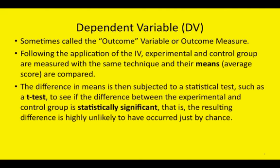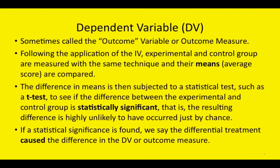This difference in means is then subjected to a statistical test, such as a t-test, to see if the difference between the experimental control group is statistically significant. That is, the resulting difference is highly unlikely to have occurred just by chance. If statistical significance is found, we say the differential treatment caused the difference in the dependent variable or outcome measure.